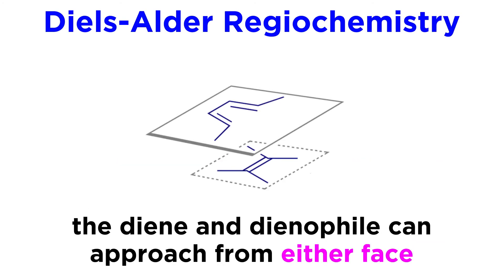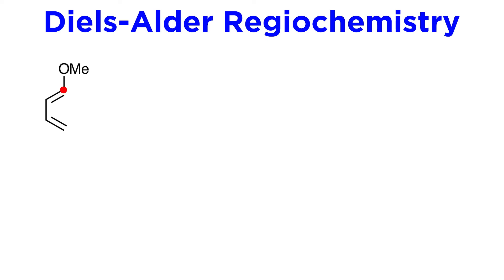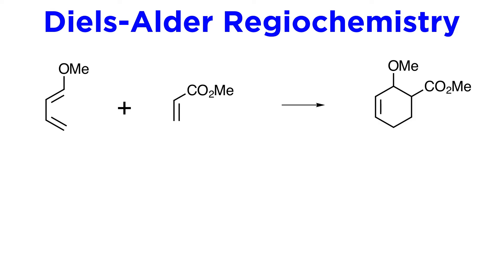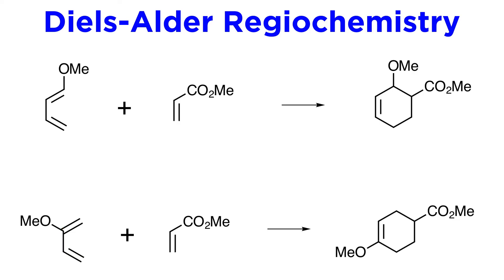However, placing these substituents on the reactants also brings up questions regarding regiochemistry, as the reactants can approach one another from either face, being planar molecules. Consider a substituent in the 1-position on the diene and a monosubstituted dienophile — the preference will be for these substituents to end up adjacent in the product. If the substituent on the diene is at the 2-position, the substituents will tend to end up directly opposite one another in the product. This is due to details regarding molecular orbitals, but for now it will suffice to simply be aware of this regioselectivity.